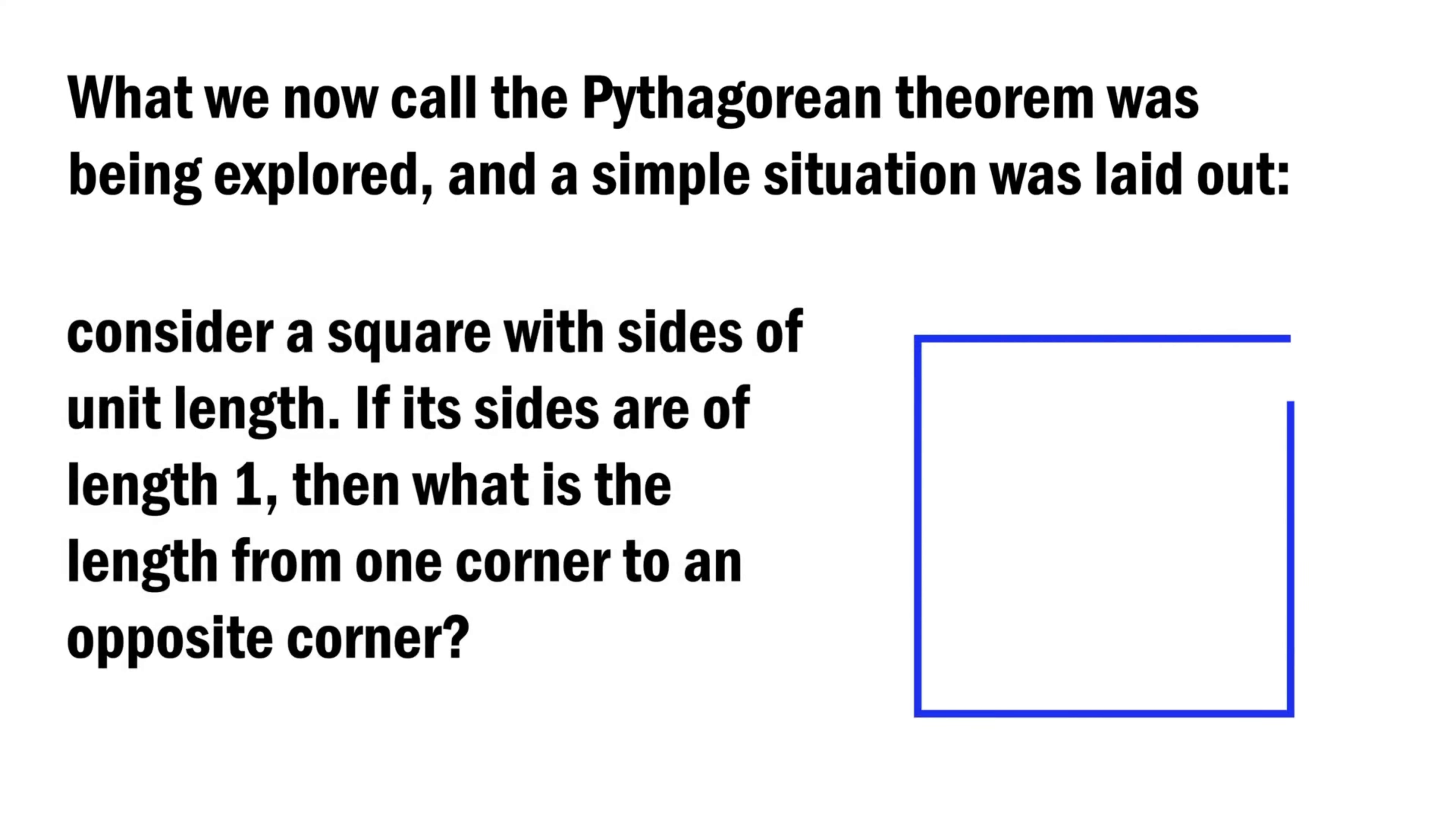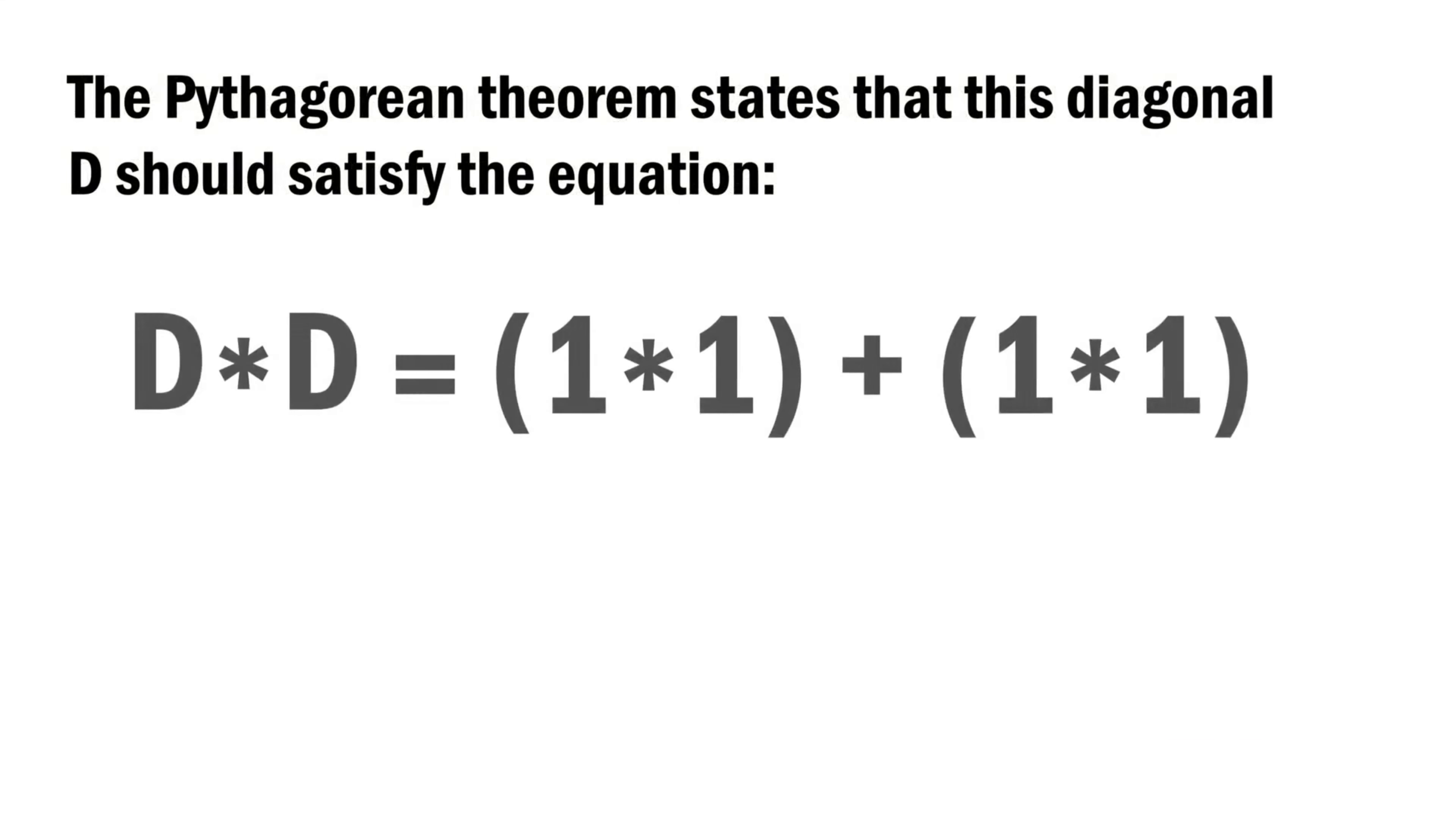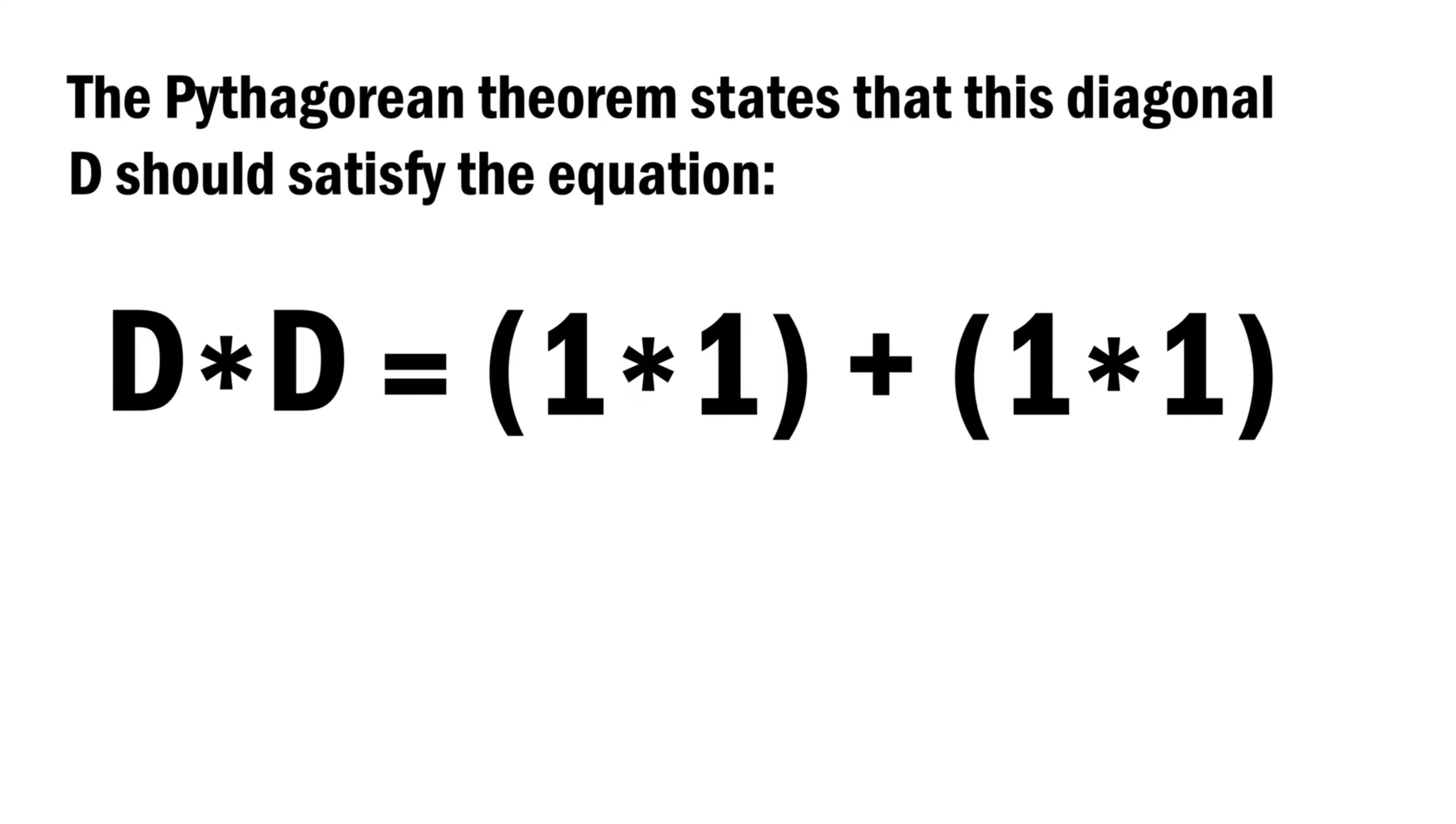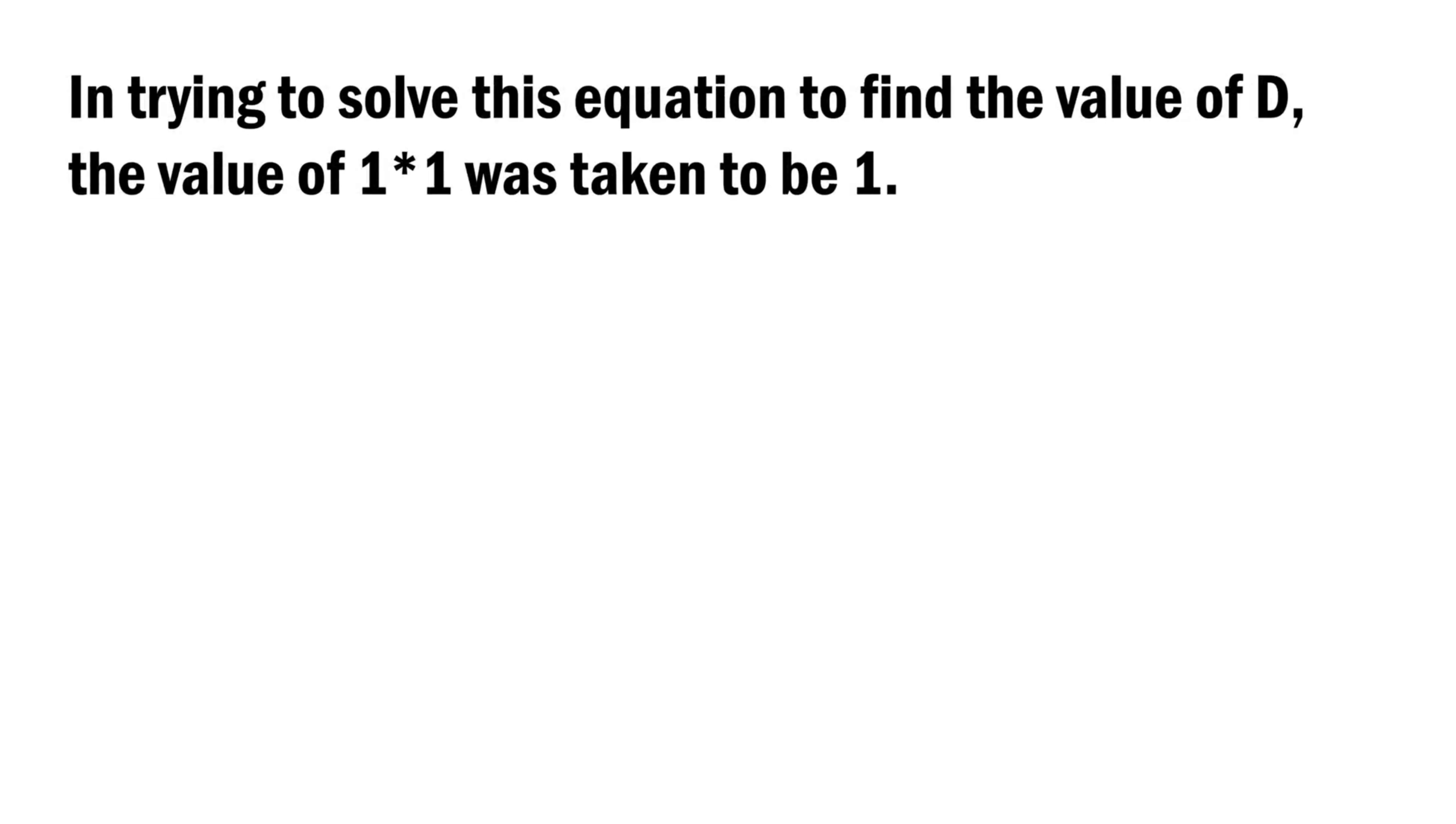Consider a square with sides of unit length. If its sides are of length one, then what is the length from one corner to an opposite corner? The Pythagorean theorem states that this diagonal D should satisfy the equation D times D equals 1 times 1 plus 1 times 1. Now here we see the genesis of defect, an assumption that would be ignored for thousands of years. In trying to solve this equation to find the value of D...